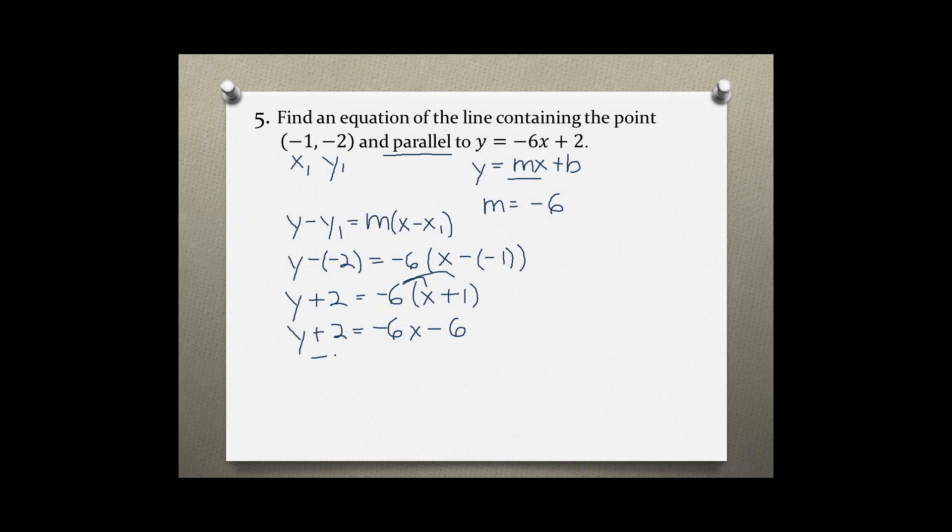Subtracting 2 from both sides, y = -6x - 8. This is the equation that I was looking for that is parallel to this first equation and contains the point (-1, -2).